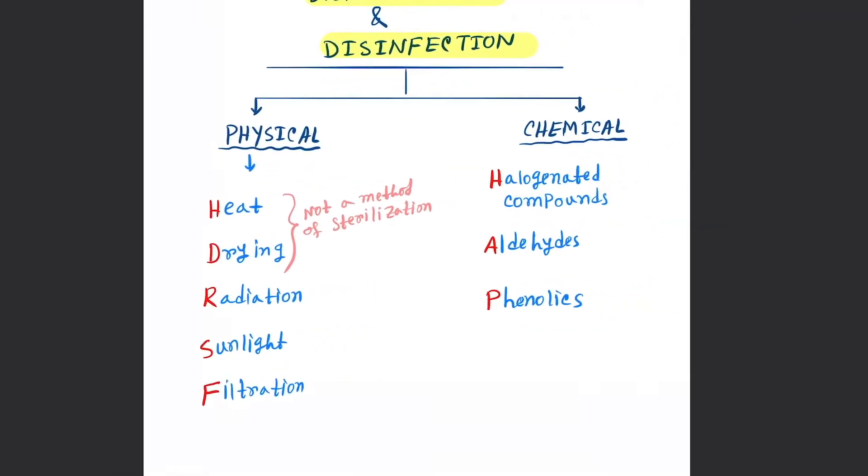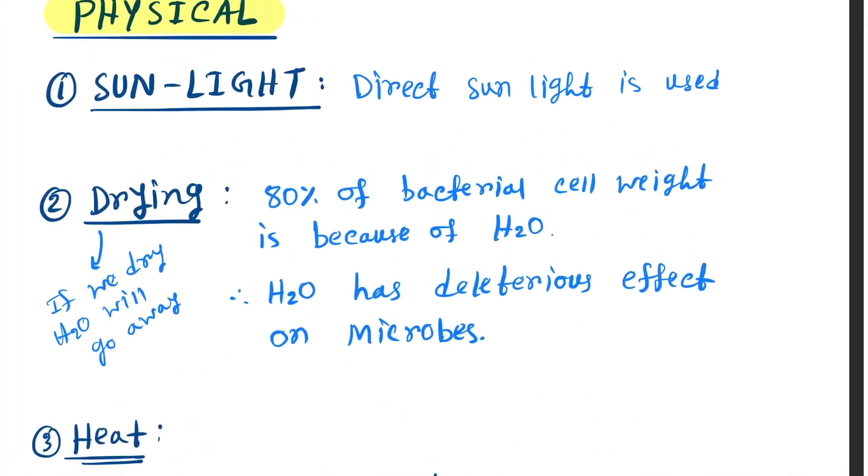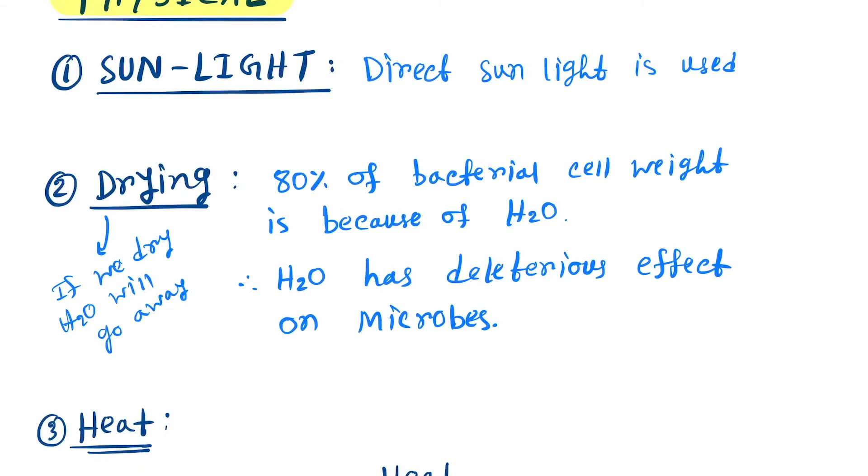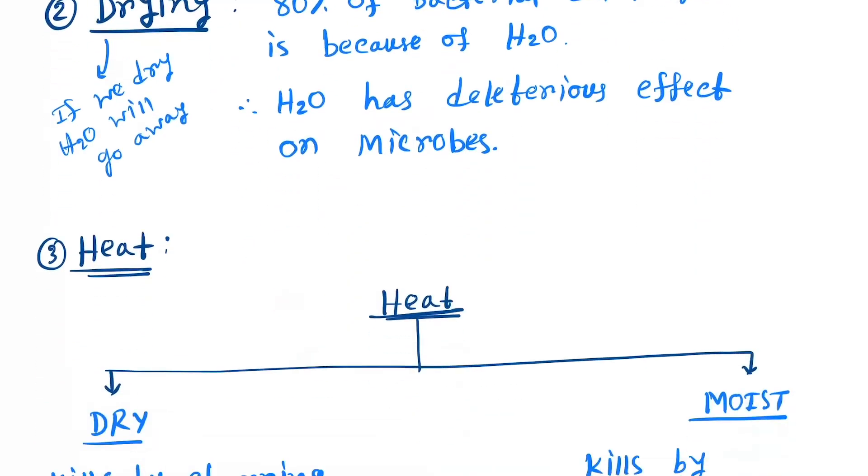Let's start with heat. First is the physical agents. First is sunlight - direct sunlight is used. Next is drying. As 80% of bacterial cell weight is H2O, if we dry, H2O will go away from the bacteria. H2O has deleterious effect on microbes.